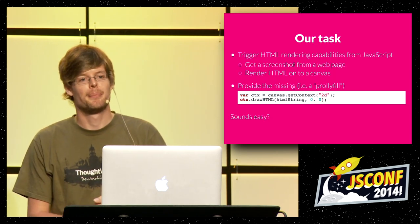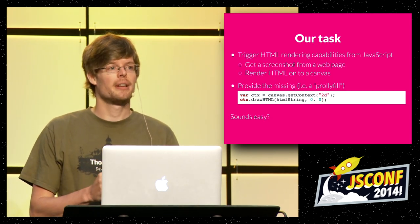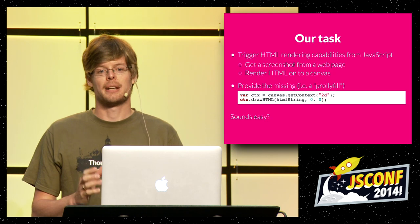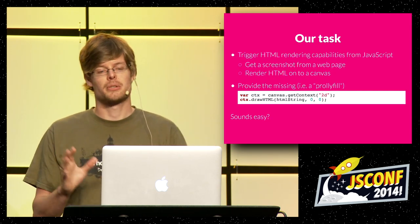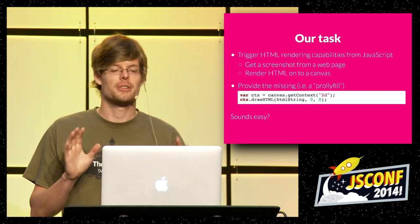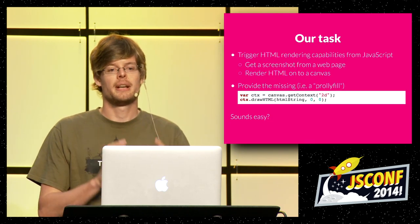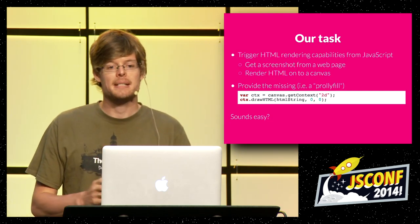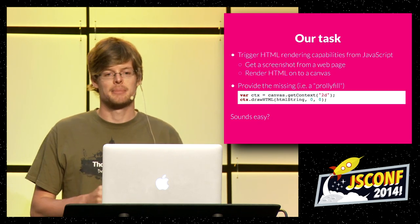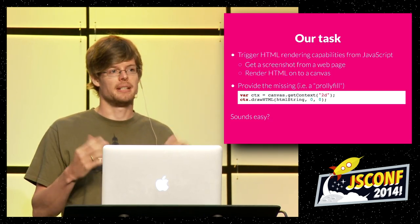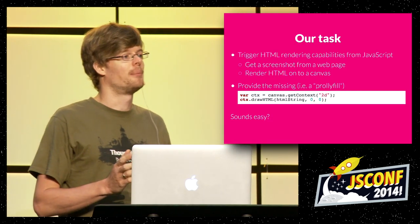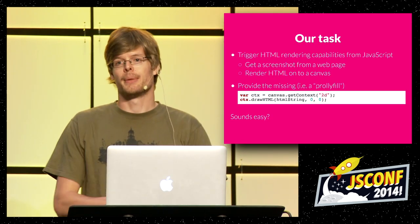What we want to do is trigger the HTML rendering capabilities of the browser from JavaScript. That's basically what the browser does at its best — it takes HTML and shows it in a nice way. What I want to do is get a screenshot from a web page and actually render HTML in the canvas — basically implementing a polyfill, filling a gap that hasn't been defined by a standards body. And this is how it looks: it's basically just canvas getContext, drawHTML. That's what I want to do. Looks pretty easy, right?